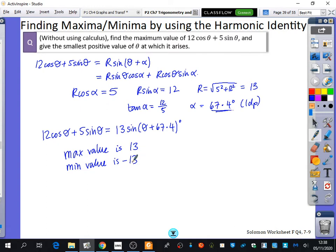But the question does say, when does the maximum value occur? What is the smallest positive value of theta at which it arises? So I know the maximum value is 13, and this occurs when sine of theta plus 67.4 is equal to 1. That's when sine is the maximum. And when this thing is a maximum, what is the value of the argument, the overall argument, when sine is 1?